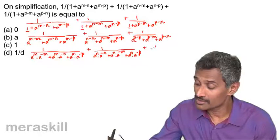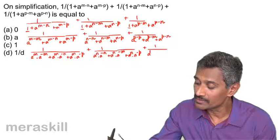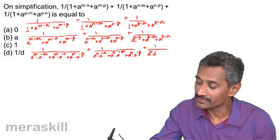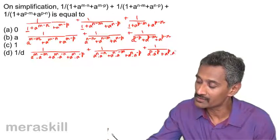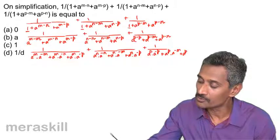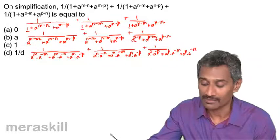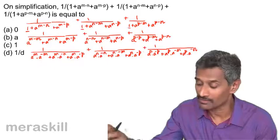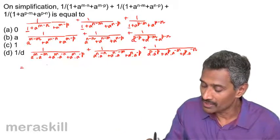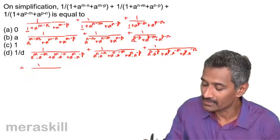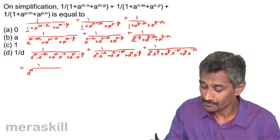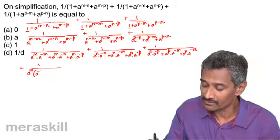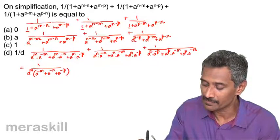Continuing: plus a raised to n into a raised to minus m, plus a raised to n into a raised to minus p; and for the third fraction: a raised to p into a raised to minus p, plus a raised to p into a raised to minus m, plus a raised to p into a raised to minus n. Now we can take out a raised to m as a common factor, giving a raised to minus m plus a raised to minus n plus a raised to minus p.